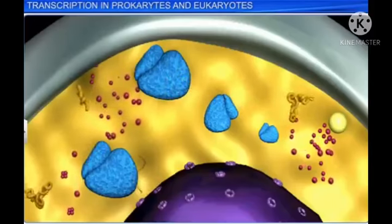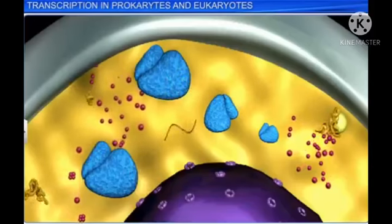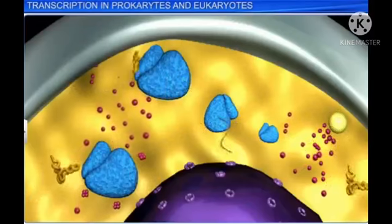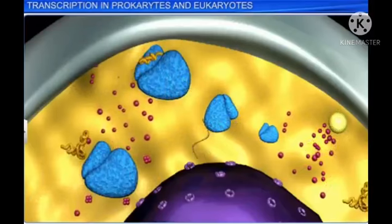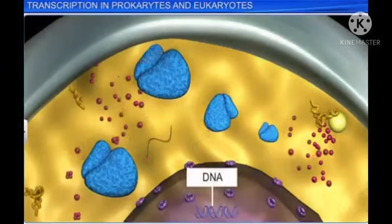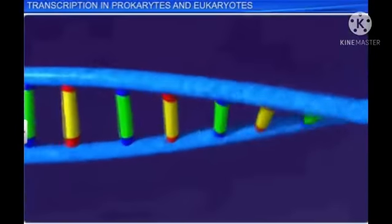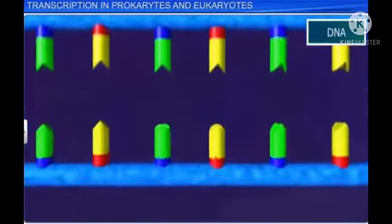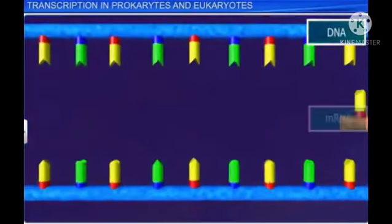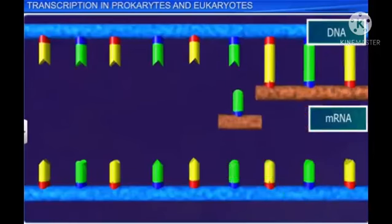The building of protein is very essential to the functioning of an organism. In this protein building task, DNA acts as a master blueprint containing all genetic information about the protein to be created. The genetic information from DNA is transferred to messenger RNA or mRNA through a process known as transcription.